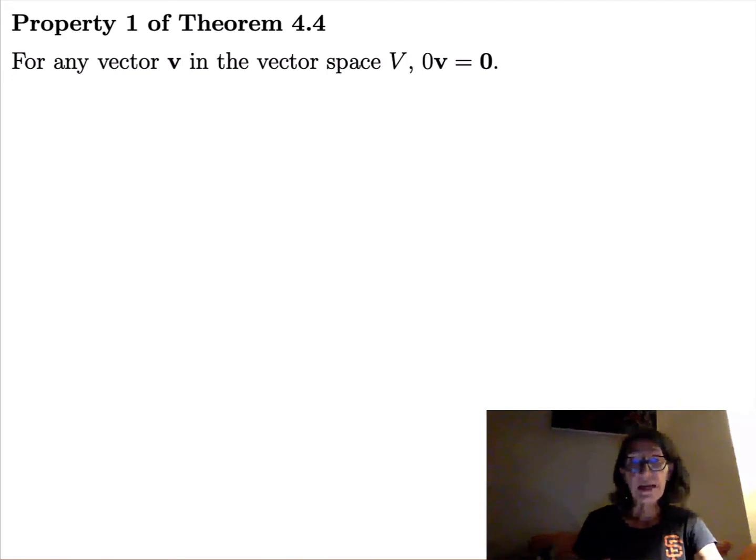Property 1 says for any vector v in a vector space, if you multiply v by the scalar 0, you're always going to get the additive identity vector in your vector space. So notice on the left side of this equation, we have the number 0 times a boldface v, so that's a scalar times a vector. On the right side, we have a boldface 0.